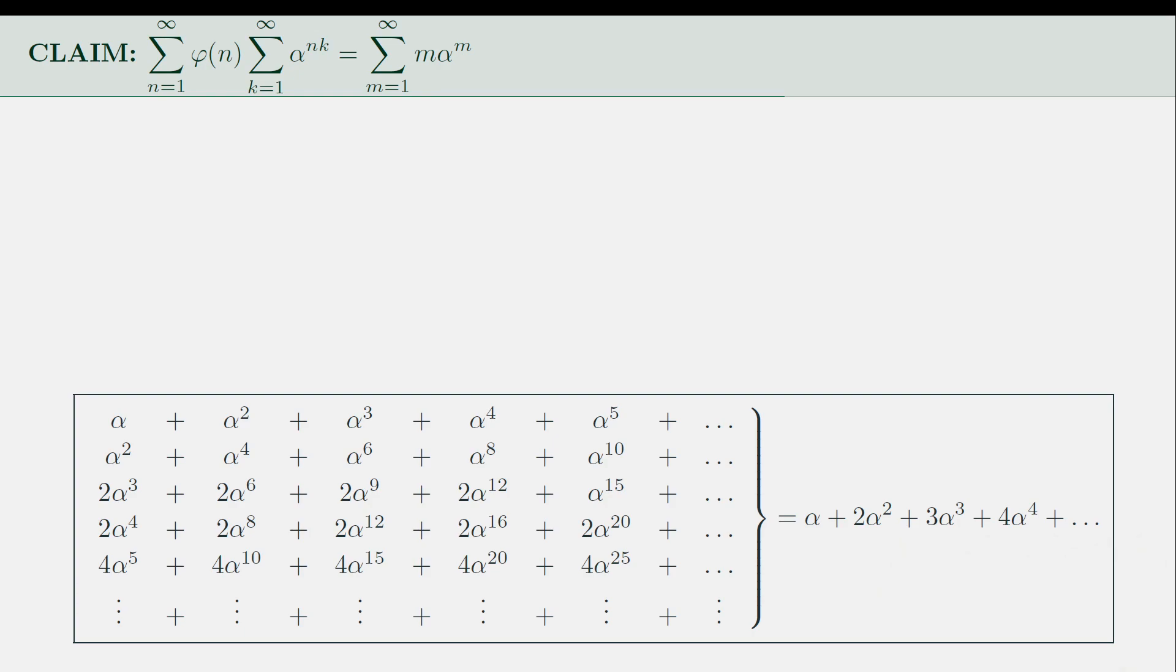To make use of the theorem, we have to change our perspectives when looking at the double summation. Similar to what we did in the previous illustration, let's look at summing the powers of α instead of looking at n. Hence, we make the index m instead of n and k.